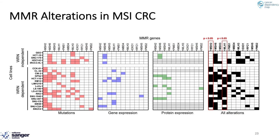Through integration of multiple mutation, gene expression, and protein expression data sets, we confirmed that all MSI cell lines have one or more alterations in the mismatch repair genes. But interestingly, when we compared the Werner-dependent and independent populations, we observed a statistically significant enrichment for MSH2 and MLH1 mutations in Werner-dependent models compared to Werner-independent cell models, suggesting that alterations in specific mismatch repair genes might actually confer the Werner dependency.